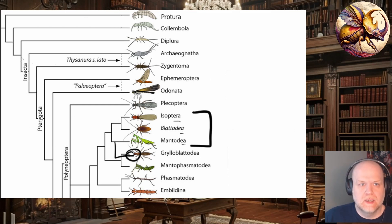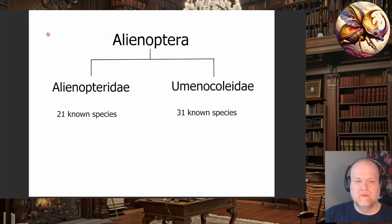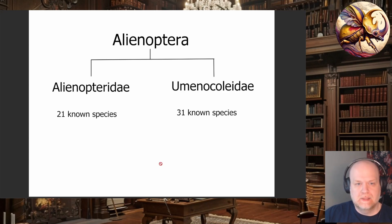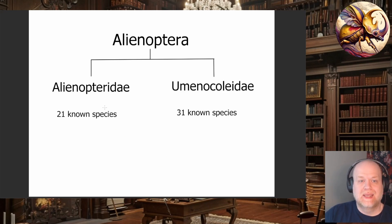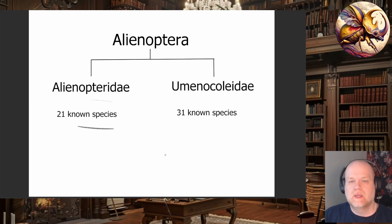So let's look at these a little bit. There are currently two families within the Alienoptera: the Alienopteridae and the Eumenocaleidae. The Alienopteridae are, as you can guess, the namesake group for this order. Unfortunately there are just not very many species known — only 21 known species in this group. And the Eumenocaleidae have 31 known species.